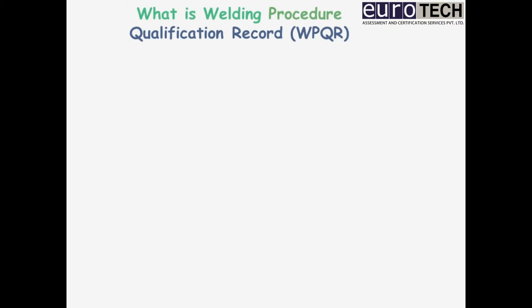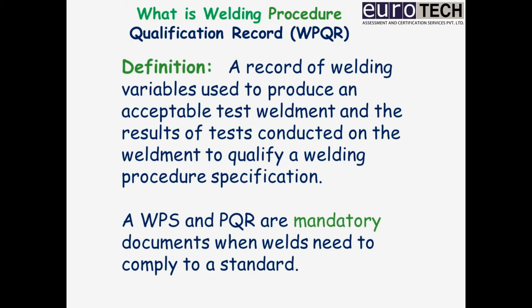Let us discuss what is Welding Procedure Qualification Record, WPQR. It is defined as a record of welding variables used to produce an acceptable test weldment, and the results of tests conducted on the weldment to qualify a welding procedure specification. A WPS and PQR are mandatory documents when welds need to comply to a standard.